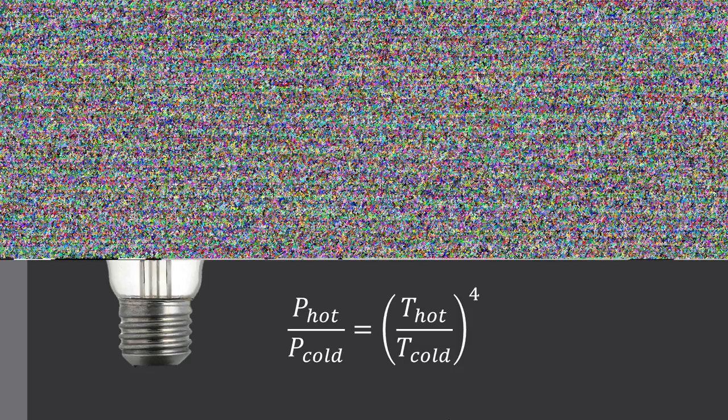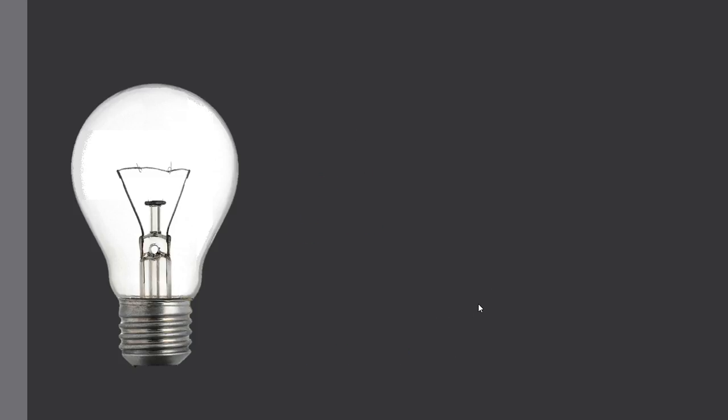We use this ratio again of powers hot to cold being equal to temperatures hot to cold raised to the power of 4. Let's substitute in a hot temperature of 2000, our hot power of 200 watts, our cold temperature of 500 K. And of course our power cold is what we're trying to solve. On the right hand side of our equation, 2000 divided by 500. This can easily be substituted in and calculated to be 4. And 4 by 4 by 4 by 4 gives the value of 256.